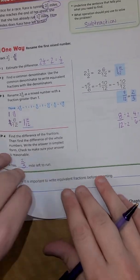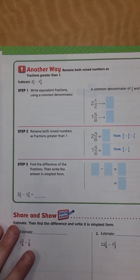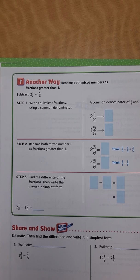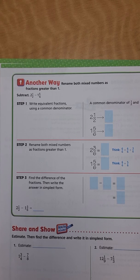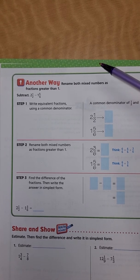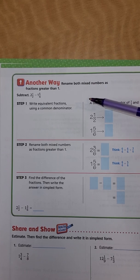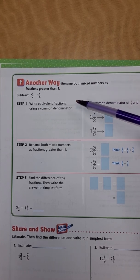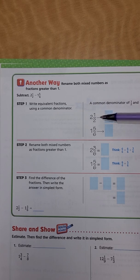Let's flip to the back of that page — here's another example. This one says to rename both mixed numbers as a fraction greater than one. The first thing is to subtract two and a half minus one and five-sixths, so we're going to write equivalent fractions using the common denominator.